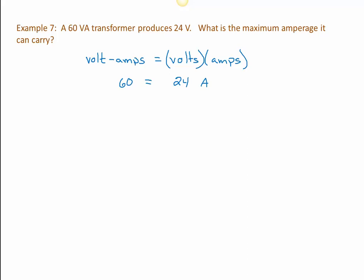Alright, let's see what you've done. On the right-hand side, A is being multiplied by 24. So, to undo the multiplication, we divide by 24, and of course we do that on both sides. On the right-hand side, 24 divided by 24 is 1, and that leaves A all by itself. On the left-hand side, 60 divided by 24 is 2.5. So, what we know is that the transformer can carry up to 2.5 amps.